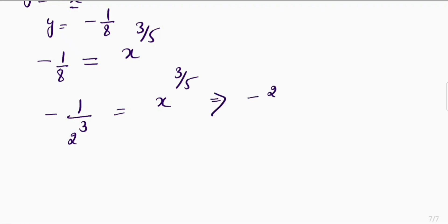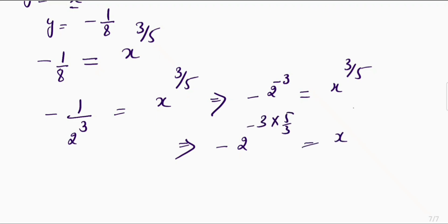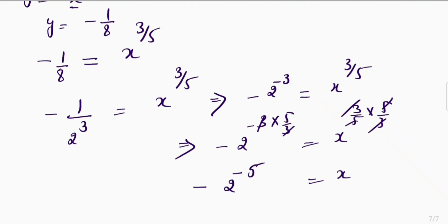So in order to get the value of x I will multiply both sides' powers by 5 by 3. So I will get negative 2 raised to the power negative 3 times 5 by 3 is equal to x, since the 3 by 5 and 5 by 3 cancel. So x is equal to negative 2 raised to the power negative 5, which is equal to 1 divided by 2 raised to the power 5, which is negative 1 divided by 32.